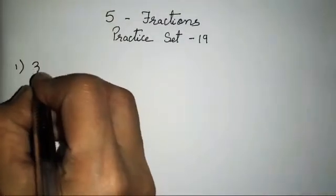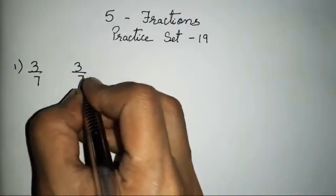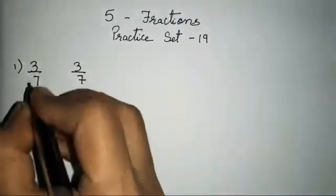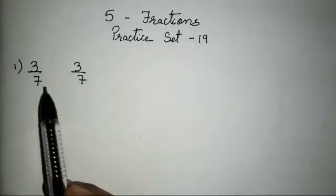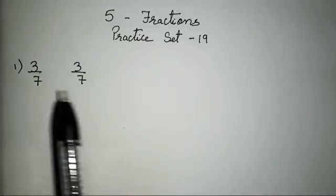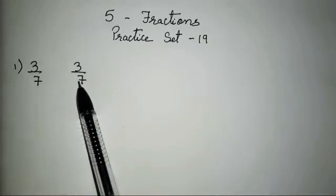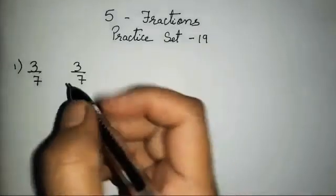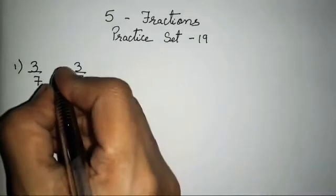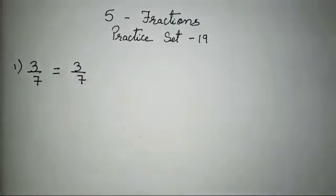The first fraction given is 3 upon 7. We have to show whether it is greater, smaller, or equal to the other fraction. You will see both the numerator and denominator are the same, so obviously it is going to be equal. It's very easy.